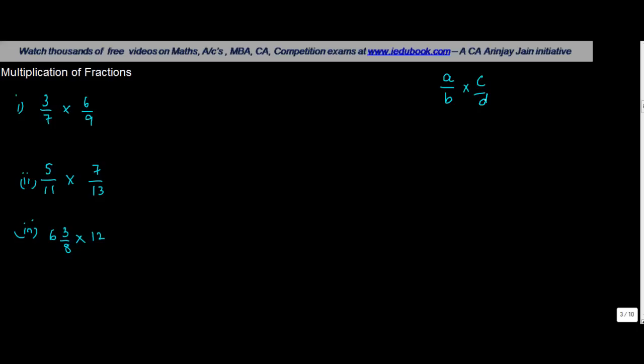We need to do the product of numerators divided by the product of denominators. Now in order to do that you have to convert a fraction into either a proper fraction or an improper fraction.